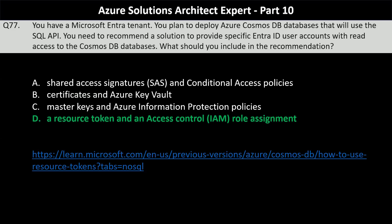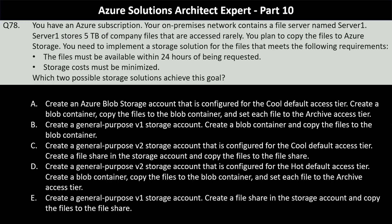Question number 78. You have an Azure subscription. Your on-premise network contains a file server named Server 1 that stores 5 TB of company files accessed rarely. You plan to copy the files to Azure storage. The files must be available within 24 hours of being requested, and storage costs must be minimized. Which two possible storage solutions achieve this goal?